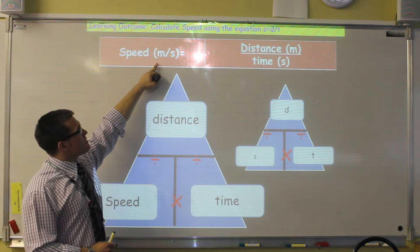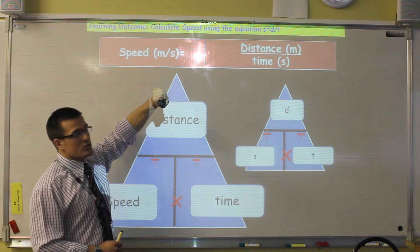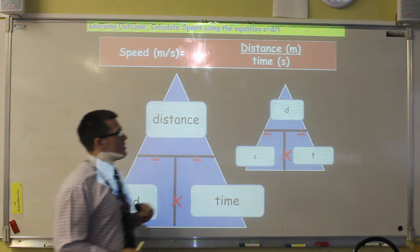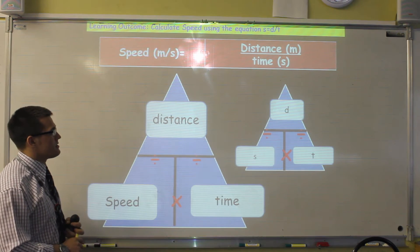So this is the basic equation for speed. Speed, which has got units of meters per second, just like miles per hour, is distance divided by time. So speed is distance divided by time.